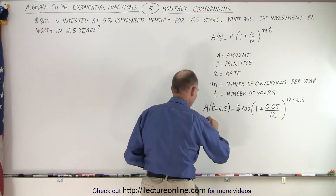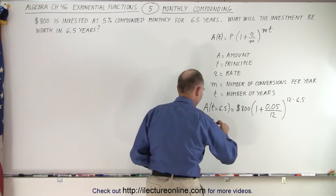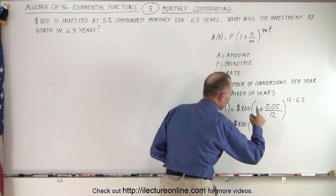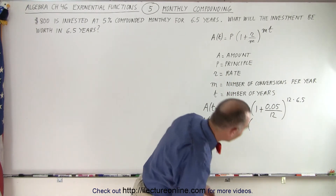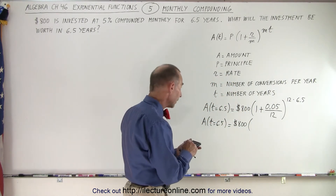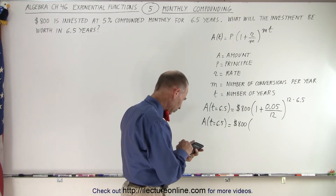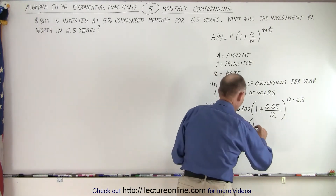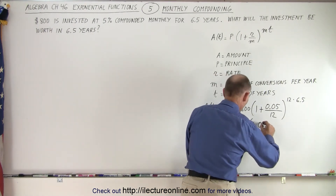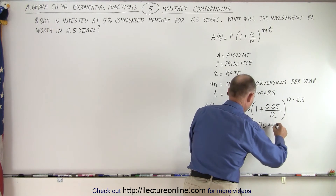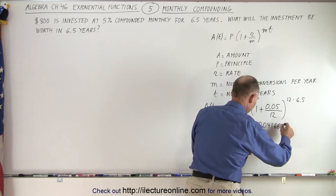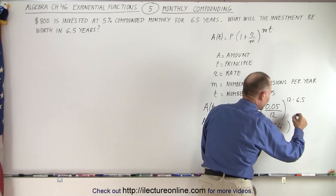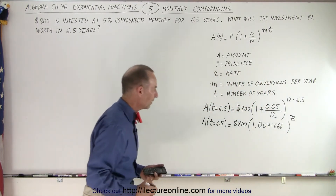The amount when t equals 6.5 is equal to $800 times 1 plus that value. For that, we're going to need a calculator. We get 0.05 divided by 12, which gives us 1.0041666 and so forth. The exponent is 12 times 6.5, which equals 78. So we raise it to the 78th power.